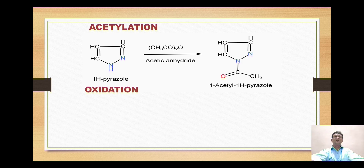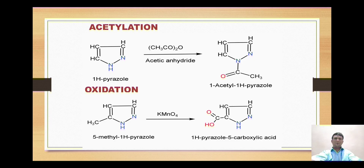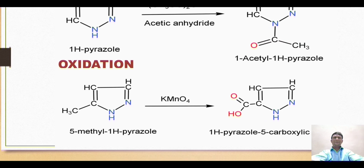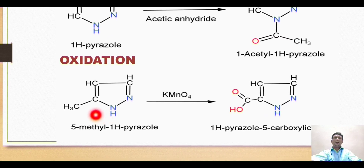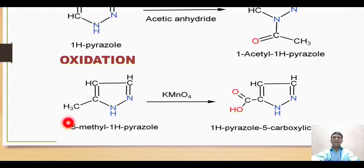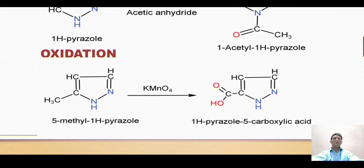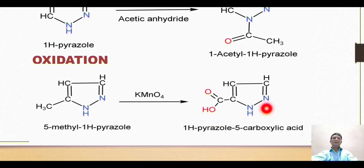The next reaction is oxidation. Some derivatives of pyrazole undergo this reaction — for example, 5-methyl-1H-pyrazole gives the oxidation reaction with KMnO4 (potassium permanganate). The side alkyl methyl chain gets oxidized to the corresponding carboxylic acid, giving the formation of pyrazole-5-carboxylic acid.